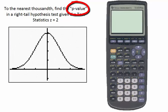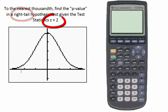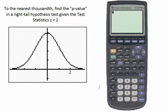In a very similar problem, we're asked to find the p-value in a right-tail hypothesis test given the test statistic z equal to 2. It's important to understand the association between p-value and test statistic so that if we know which tail the hypothesis test is being performed in and we're given the test statistic, we can find the p-value. The test statistic is the number on the x-axis, which in this case will be to the right of the mean, which is 0.